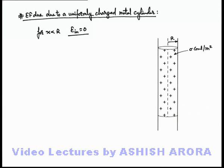Here we can see that we can consider a cylindrical Gaussian surface like the figure which we can see here.